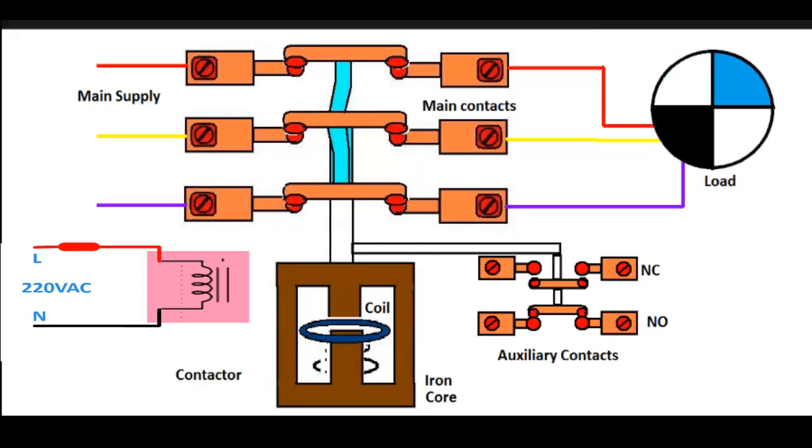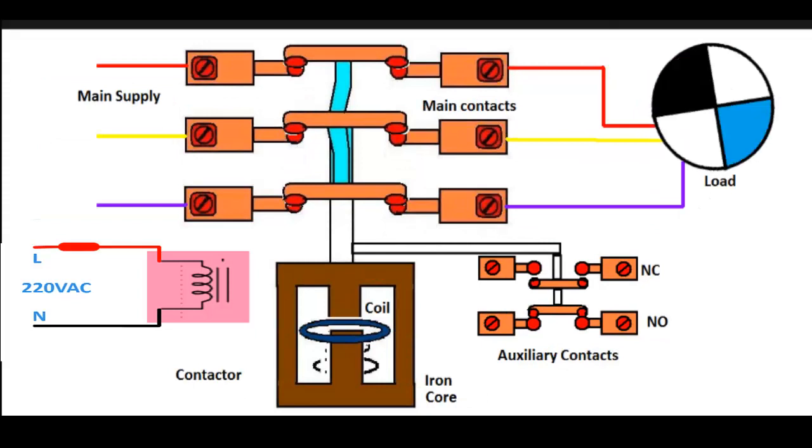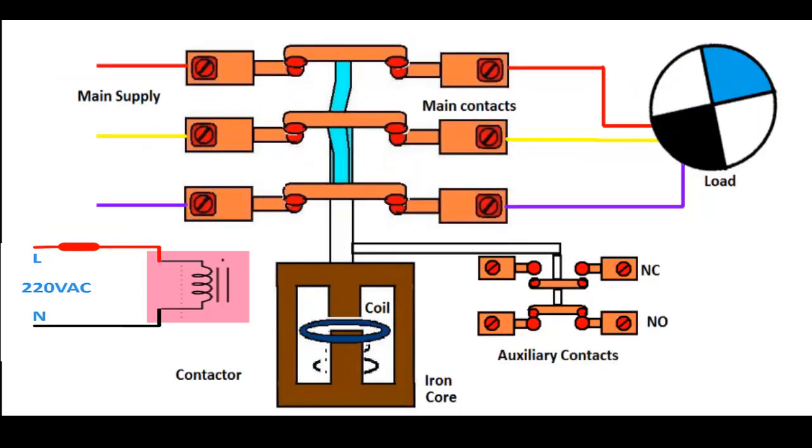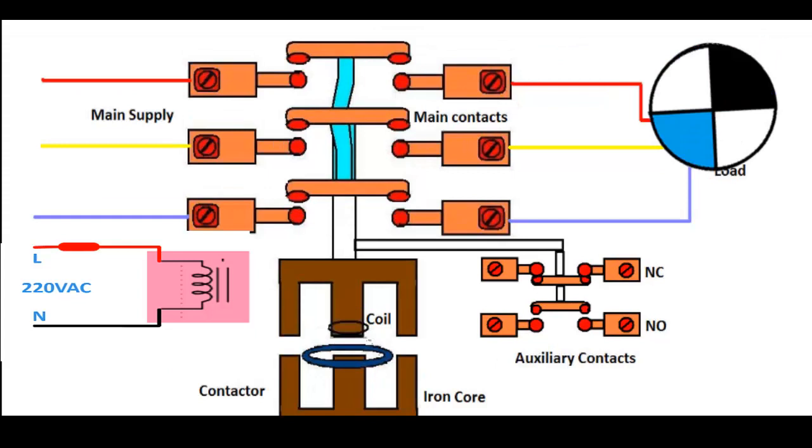This magnetic field when interacts with an iron core produces an electromagnet, which then attracts another core which is connected with this plunger. So when it attracts the core towards itself, the plunger moves down and it will short all the main contacts across each other.